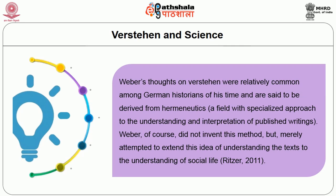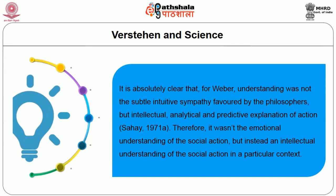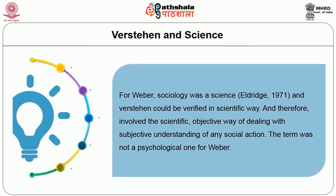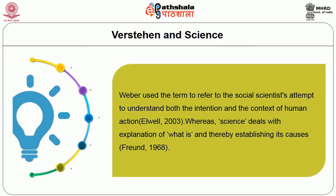Weber did not invent this method, but merely attempted to extend the idea of understanding the text to the understanding of social life. For Weber, understanding was not subtle intuitive sympathy favored by the philosophers, but rather intellectual, analytical, and predictive explanation of action. It was not the emotional understanding of social action, but instead an intellectual understanding of social action in a particular context. For Weber, sociology was a science and Verstehen could be verified in a scientific way, therefore involving the scientific objective way of dealing with subjective understanding of any social action. Weber used the term to refer to the social scientist's attempt to understand both the intention and the context of human action.